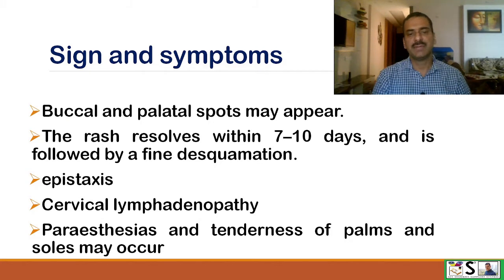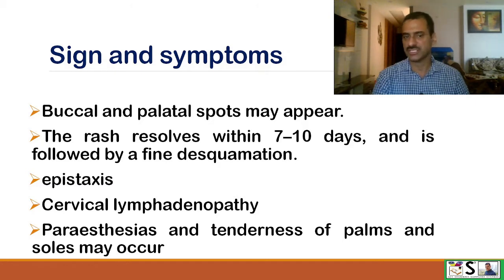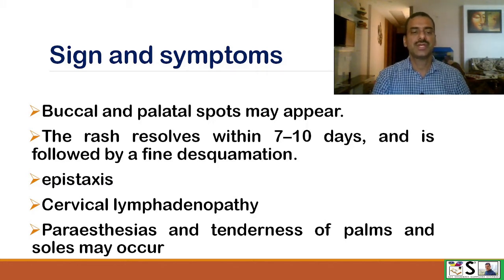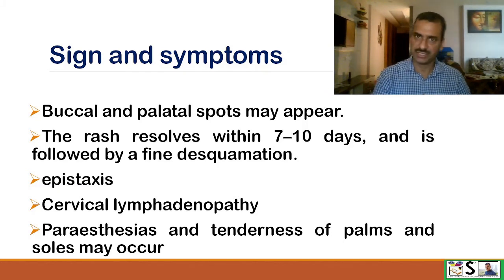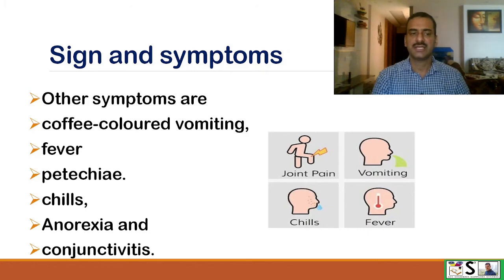Buccal and palatal spots may appear. The rashes resolve in 7 to 10 days and are followed by fine desquamation of the skin. Epistaxis may appear and cervical lymphadenopathy may occur. Other symptoms include coffee-colored vomiting, fever, patches, chills, anorexia, and conjunctivitis.